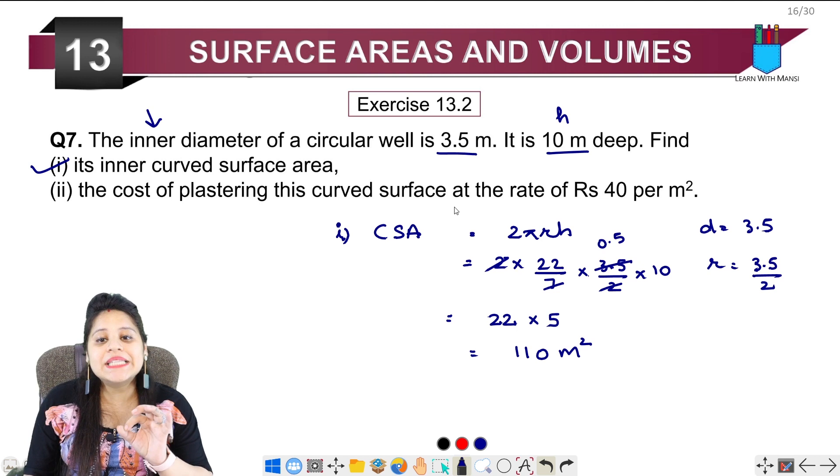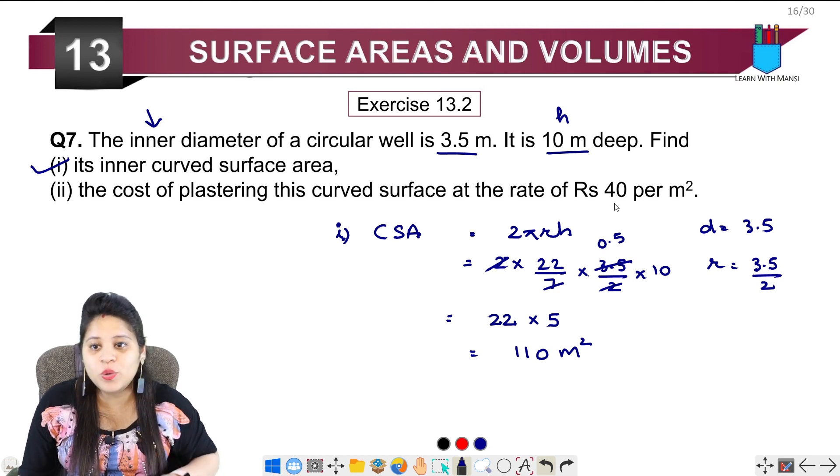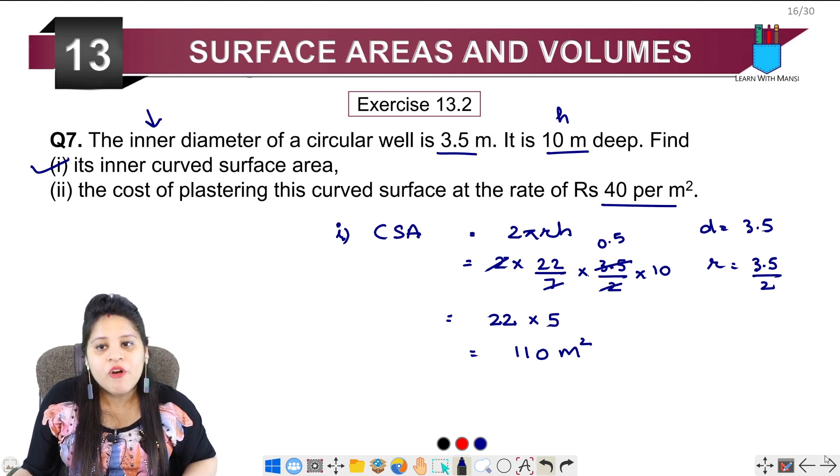Part two: Find the cost of plastering this curved surface at the rate of Rs. 40 per meter square.